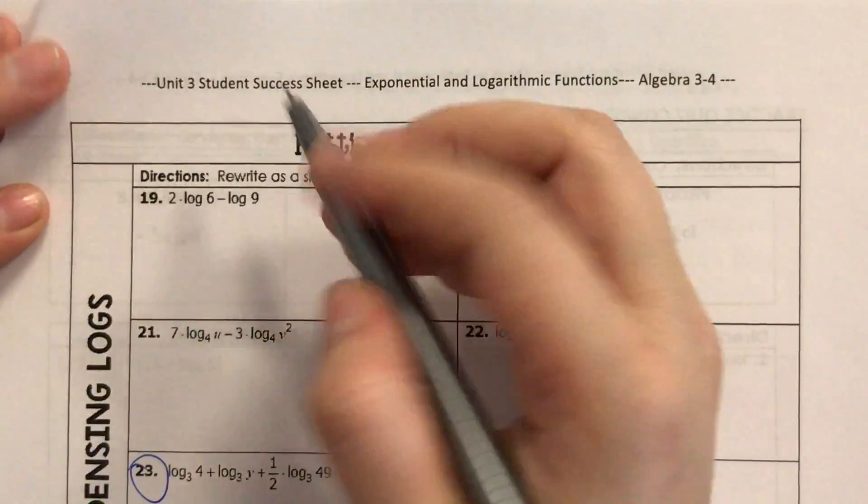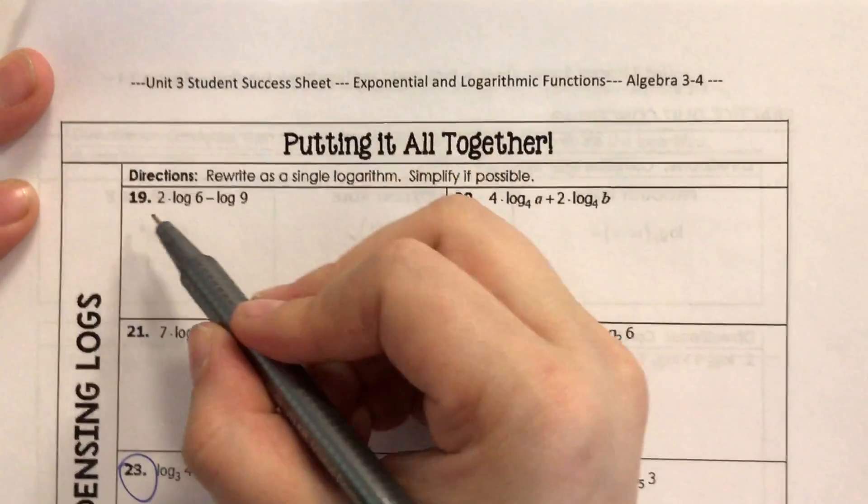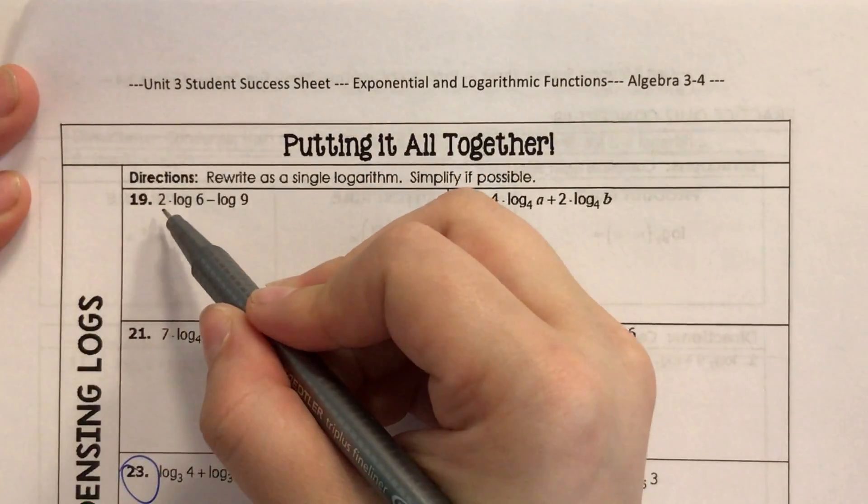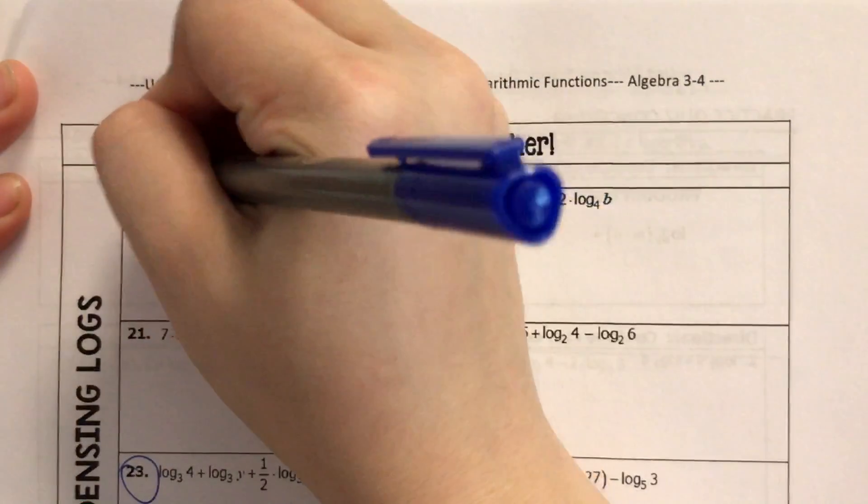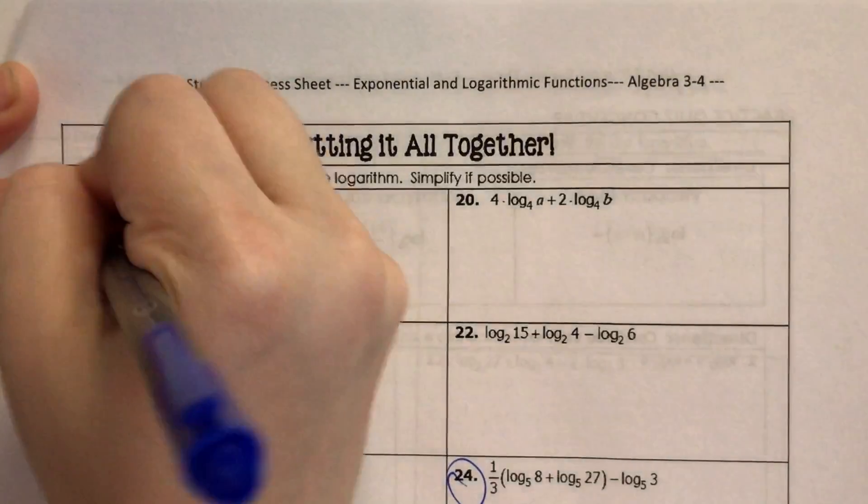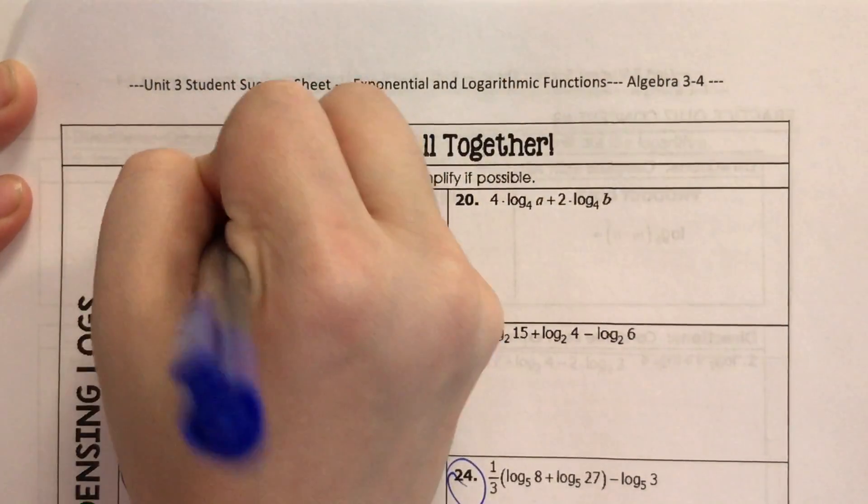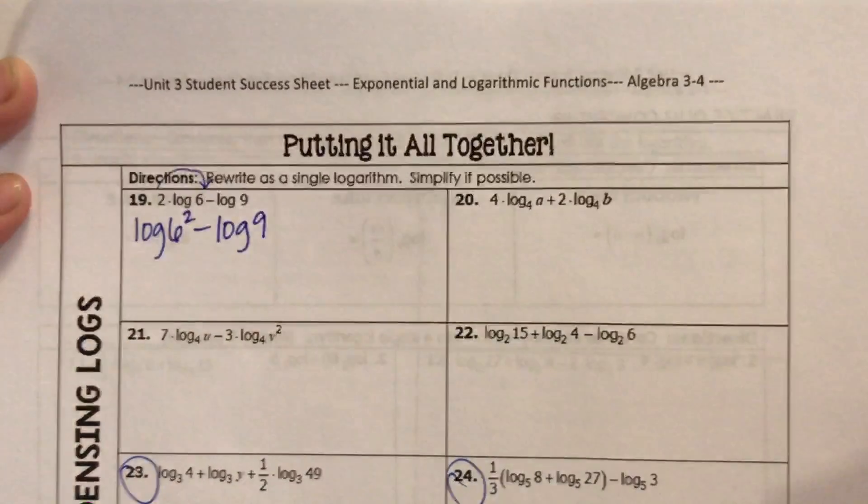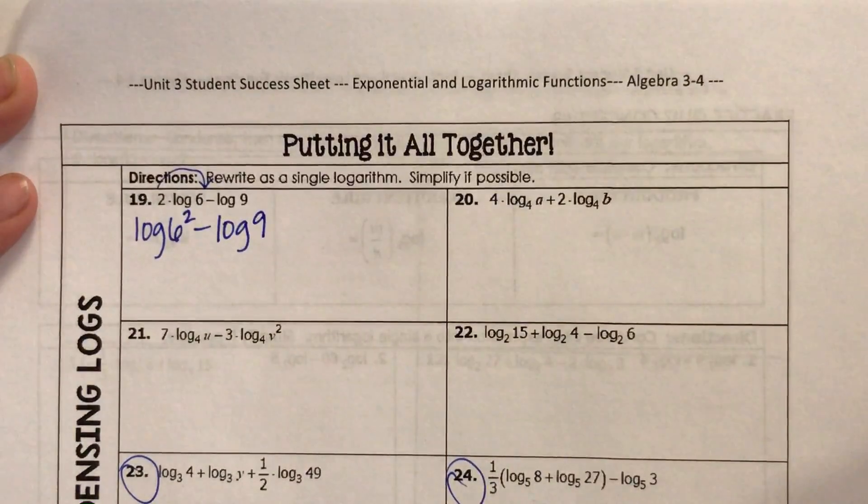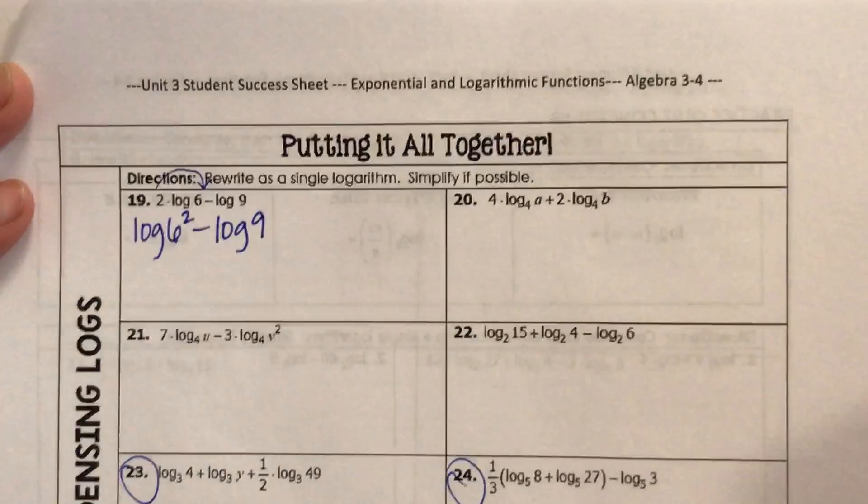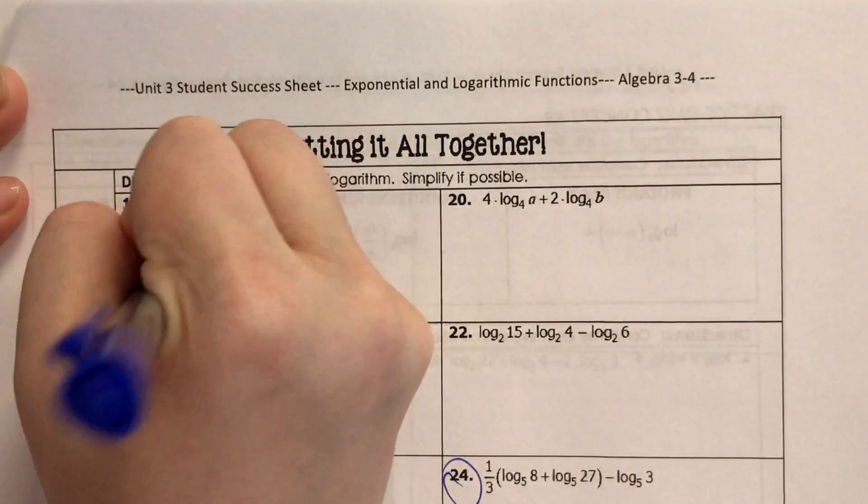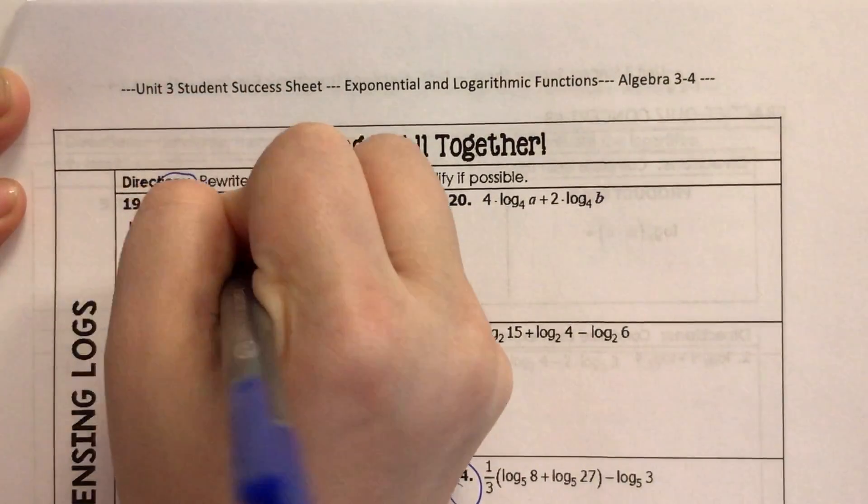2 times log of 6 minus log of 9. I know that if I have a number out in front of the logarithm, I can change that to the exponent. So this now becomes log 6 squared minus log 9. Well, log 6 squared is log 36 minus log 9.